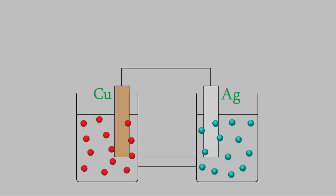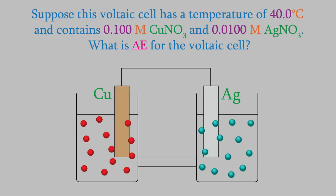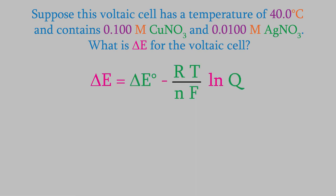For example, suppose we look at our voltaic cell with copper and silver again, but this time the temperature is 40.0 degrees Celsius, and the concentrations are 0.100 molar for the copper nitrate, and 0.0100 molar for the silver nitrate. What will be the voltage produced by the voltaic cell? These aren't standard conditions, so we'll use the Nernst equation for this one.